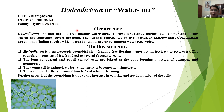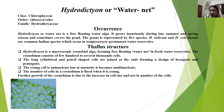Hydrodictyon, the water net, is a free-floating water alga. It shows luxuriant growth during late summer and spring season, and sometimes covers the whole pond. There are five species present. In India, Hydrodictyon indicum and Hydrodictyon reticulatum are common Indian species, easily occurring in temporary and permanent water reservoirs.